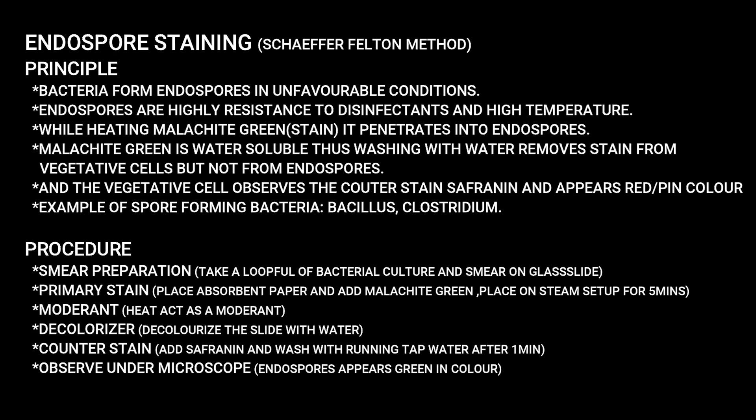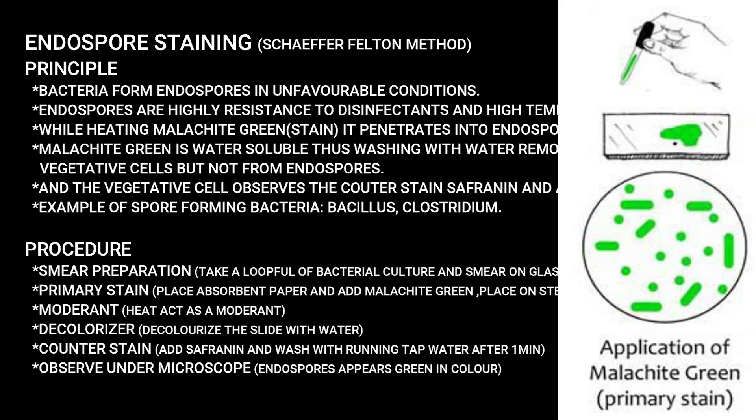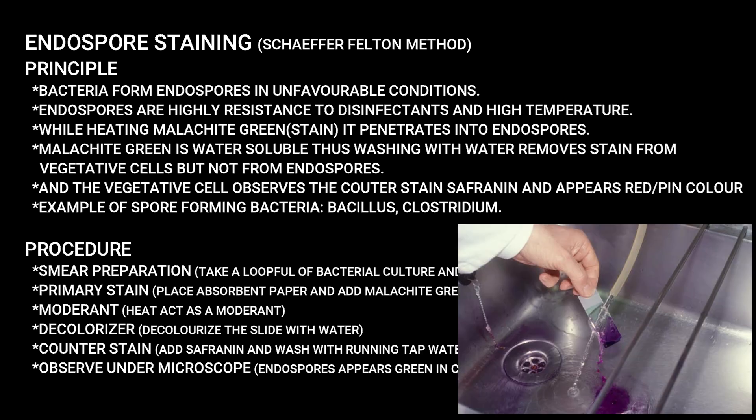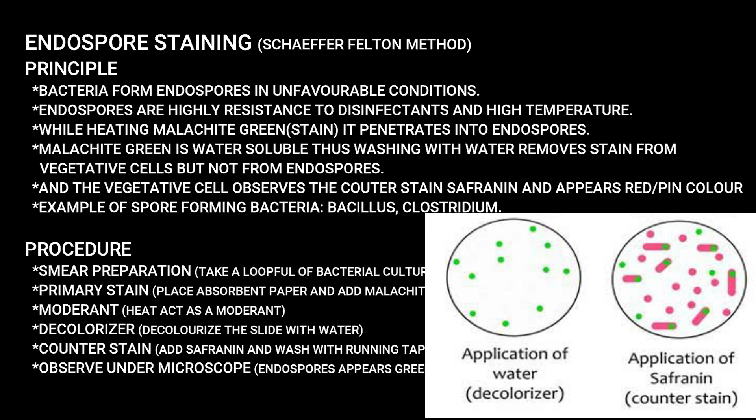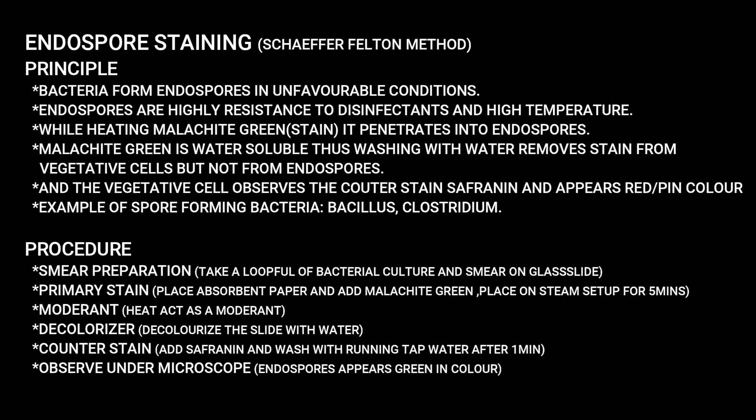Malachite green stains both vegetative cells and endospores green. After water washing, vegetative cells lose the stain. Safranine is then added as a counter stain, turning vegetative cells pink or red. Examples of spore-forming bacteria: Bacillus and Clostridium. Procedure: smear preparation, primary stain (malachite green with heat/steam for 5 minutes), mordant, decolorizer (water wash), counter stain (safranine), observe under microscope.